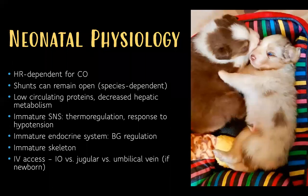Key highlights of neonatal physiology: they are heart-rate dependent for cardiac output, so anything affecting heart rate directly affects cardiac output. Their fetal shunts can remain open — species-dependent; for example, horses can have a PDA up to 72 hours to one week. They have low circulating proteins, decreased hepatic metabolism, an immature sympathetic nervous system affecting thermoregulation and response to hypotension, and an immature endocrine system making blood glucose regulation difficult.